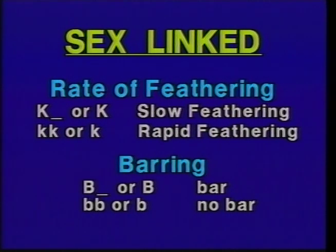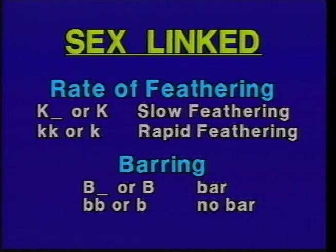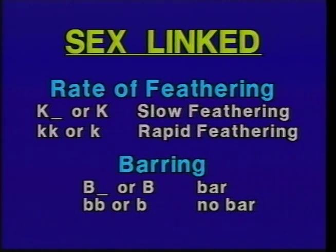A similar example exists for barring, where big B produces a barred animal in either the male or female. Little b produces no bar — if it's alone, of course, it will only occur in the female. It has to be homozygous little b, little b to produce no bar in the male. Both rate of feathering and barring can therefore be used to sex chickens, which is very useful at the day of hatch. Rate of feathering is commonly used in egg-laying varieties, and barring may be used in some meat production lines and show varieties.